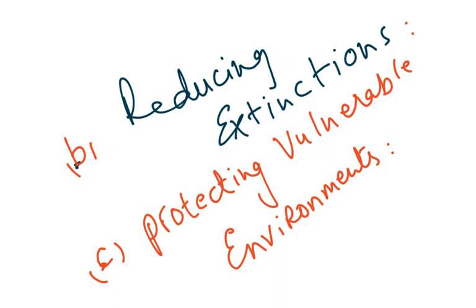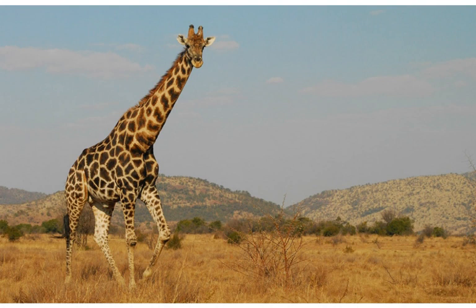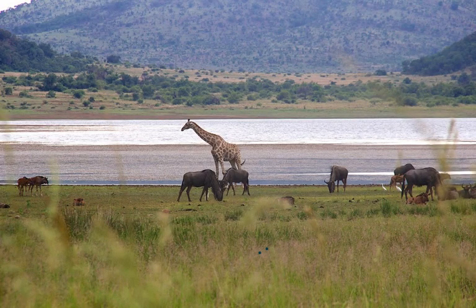We need to think about how we can address this. Topic B is reducing extinction, and topic C is protecting vulnerable environments. Looking at the world's largest national parks — these are special protected places where people cannot hunt and cannot construct. There can be no buildings and no road construction, because these trees and animals may be endangered, threatened, or undergoing extinction. So we protect these animals in national parks or natural reserves where their habitats are not disturbed in any way.